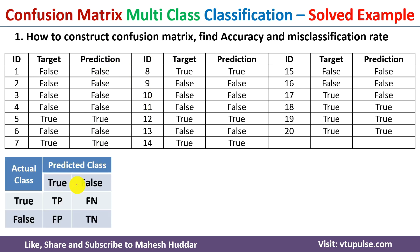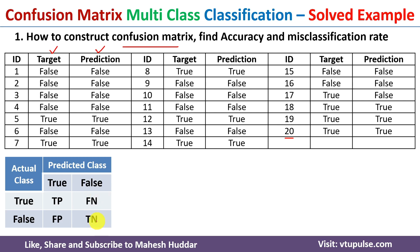The confusion matrix for two classes looks something like this. We have two classes: true and false. On the horizontal axis I have written the actual classes — true and false — and on the vertical axis I have written the predicted classes — true and false. This gives us four possibilities: true positive (actual true, predicted true), true negative (actual false, predicted false), false negative (actual true, predicted false), and false positive (actual false, predicted true).